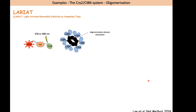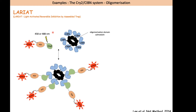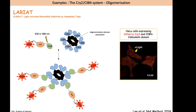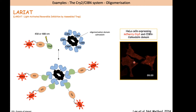The CRY2 system has also been applied to induce oligomerization and trap proteins in the cytoplasm. This system is called LARIAT — Light-Activated Reversible Inhibition by Assembled Trap. CIB1 was fused to an oligomerization domain, and on the other side CRY2 is fused to the protein of interest. When light is applied, the module interacts with CIBN and the protein is sequestered into aggregates within the cell. This is reversible — when light is removed, the optogenetic probe returns to normal.